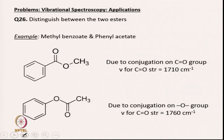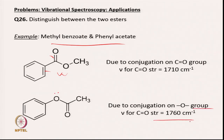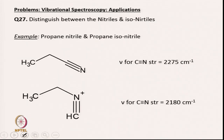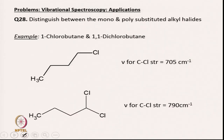Can we distinguish methyl benzoate from phenyl acetate by IR? In methyl benzoate there is conjugation between the C=O and the ring, while in phenyl acetate the lone pair on oxygen conjugates with C=O. Due to conjugation, the CO frequency in one case is around 1710 cm⁻¹ and in the other around 1760 cm⁻¹, allowing distinction. Nitrile and isonitrile can also be distinguished: C≡N stretching appears at 2275 cm⁻¹ for nitrile and 2180 cm⁻¹ for isonitrile.